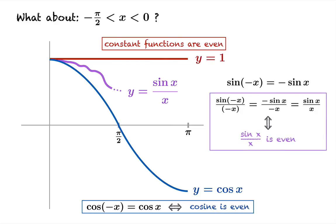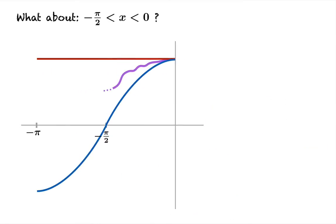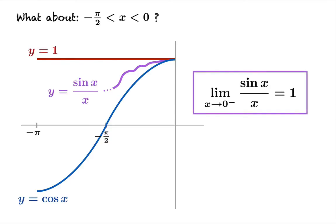So what do we have? We have three even functions, which means whatever the graph looks like from zero to pi over two, we know that we can just flip it over the y-axis to get the graph from negative pi over two to zero. And of course, now it's very clear that the limiting value of sine x over x as x approaches zero from the left also has to be one.